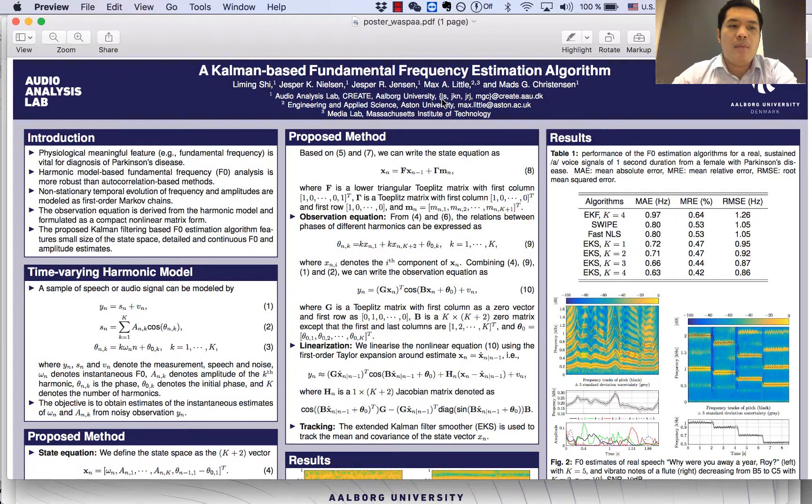The parametric based method, like the harmonic model based pitch estimation, is usually more robust than the non-parametric based method, like the autocorrelation based approach.